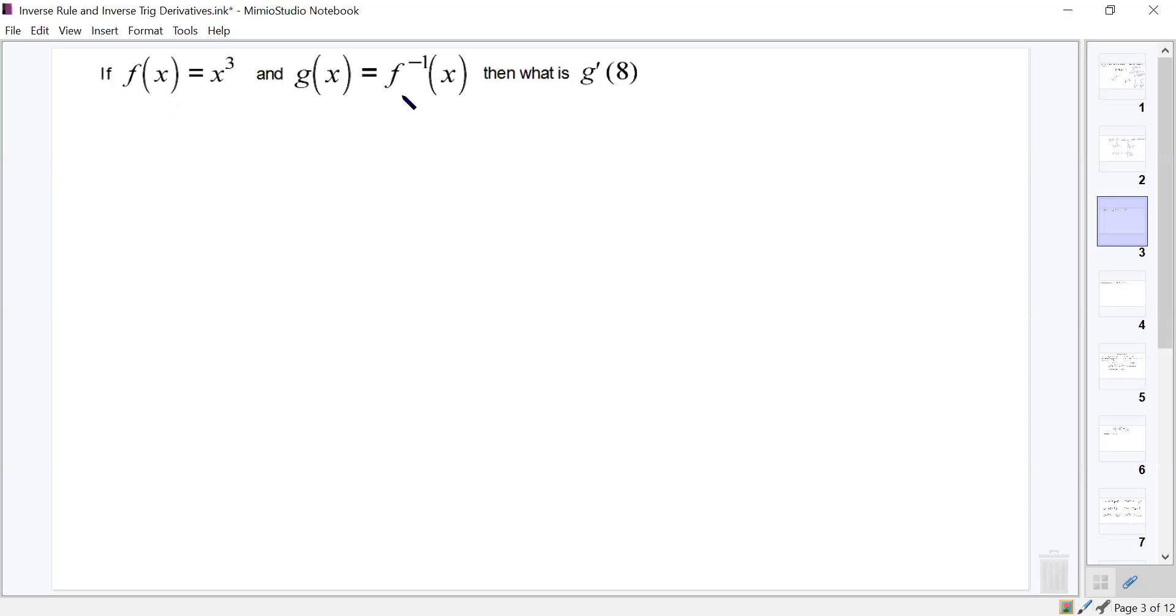So first off, what do we know? We know that f and g are inverses, and we know that g contains a point that has an x value of 8, and that's where we're looking for the derivative of g. Everybody agree that g must have some point where the x value is 8? So if g has some point where the x value is 8, then f of x must have a related point in which the y value is also 8, right? That's how inverse functions work.